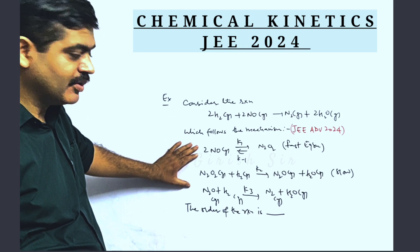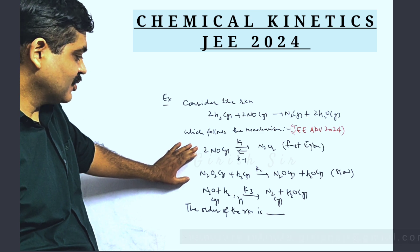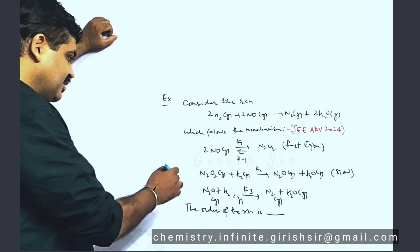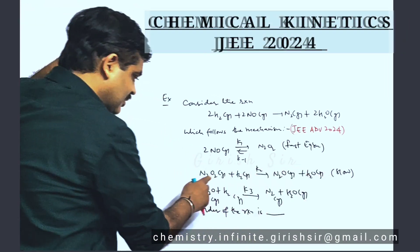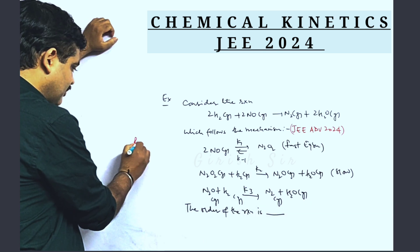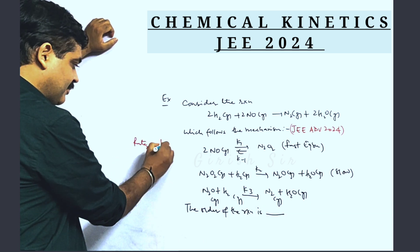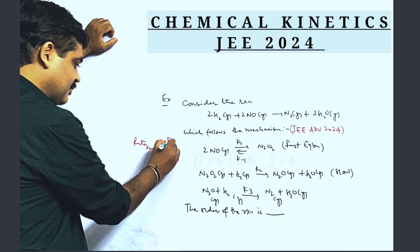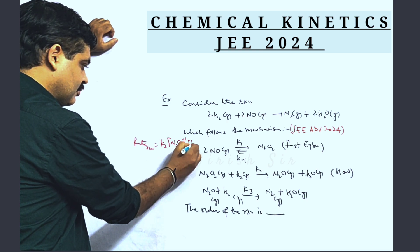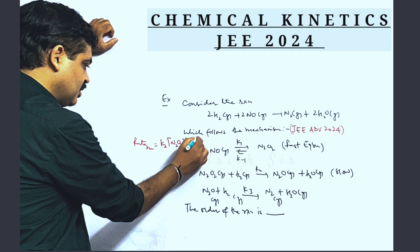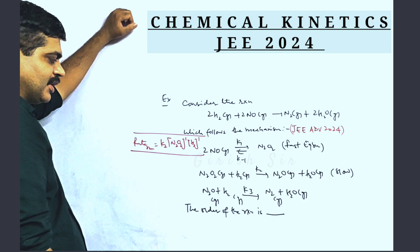We have to find the order, which means we need to find the rate law first. Using the slow step which is specified in the mechanism, we can write the rate of the reaction. This is how we can write the rate law for the reaction.